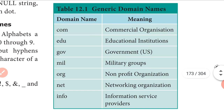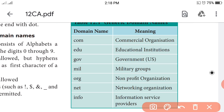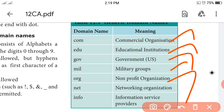In domain names, the path endings are important. For example: .com is used for commercial organizations, .edu for education institutions, .gov for government, .mil for military groups, .org for non-profit organizations, .net for networking organizations, and .info for information service providers.